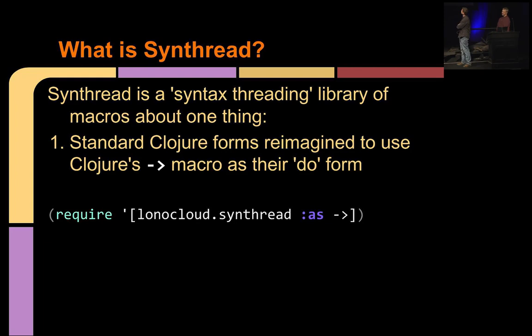Synthread is a syntax threading library, and it's just macros. It has one principle. Standard Clojure forms reimagined to use Clojure's threading macro as their do form. That's it. It's a namespace. And just to underscore that, we tend to, as a convention, take that namespace and alias it as an arrow. So that's what that arrow slash thing was. It's just a namespace alias.